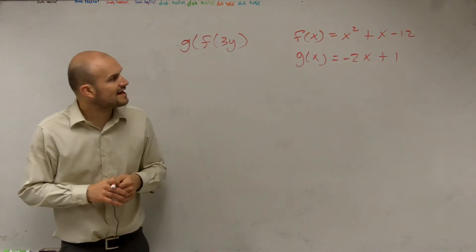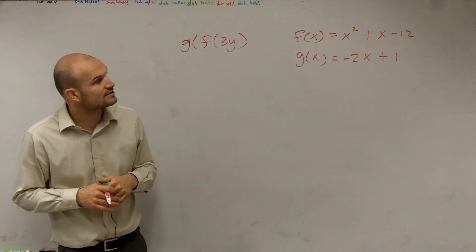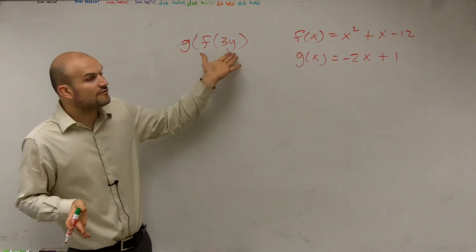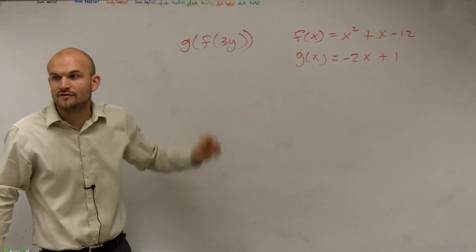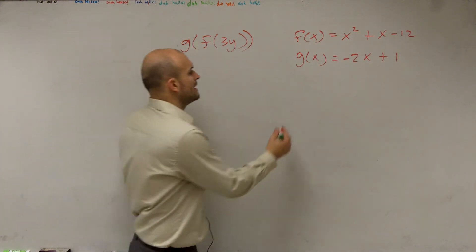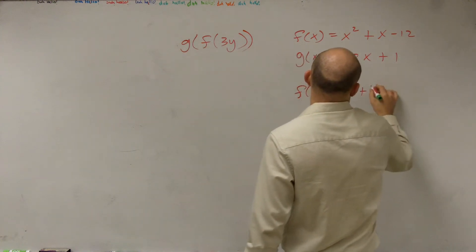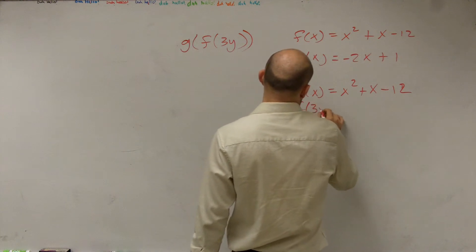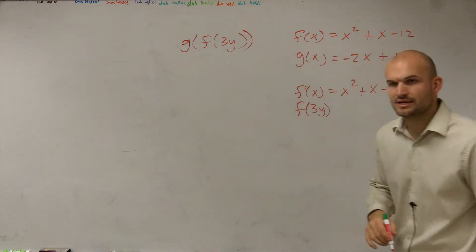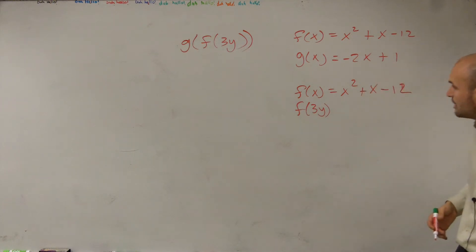So, what I have is f of x equals x squared plus x minus 12, and then I have g of x equals negative 2x plus 1. So, the first thing, if you look inside these parentheses, I have to figure out what f of 3y is. So, if I know that f of x equals x squared plus x minus 12, if I want to figure out what f of 3y is, just like I would use with any other number, I need to now plug that in to my formula.